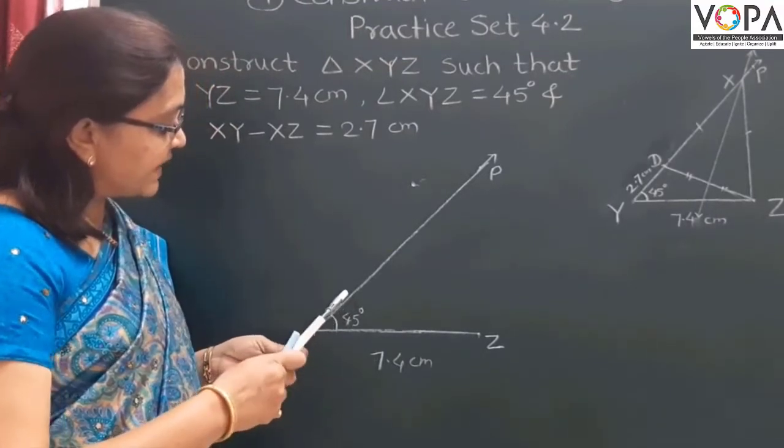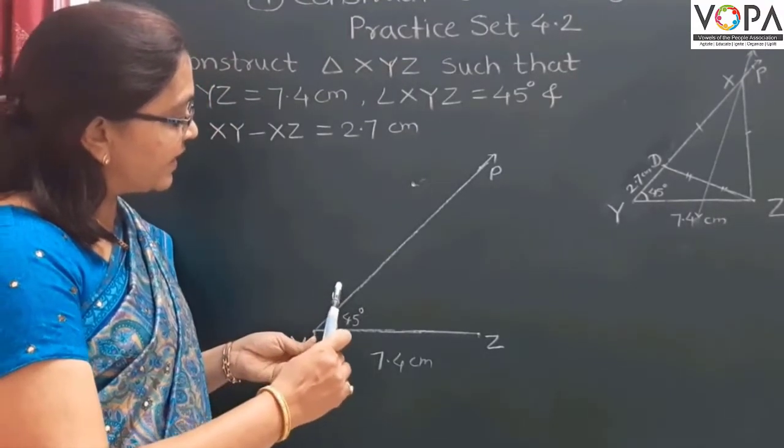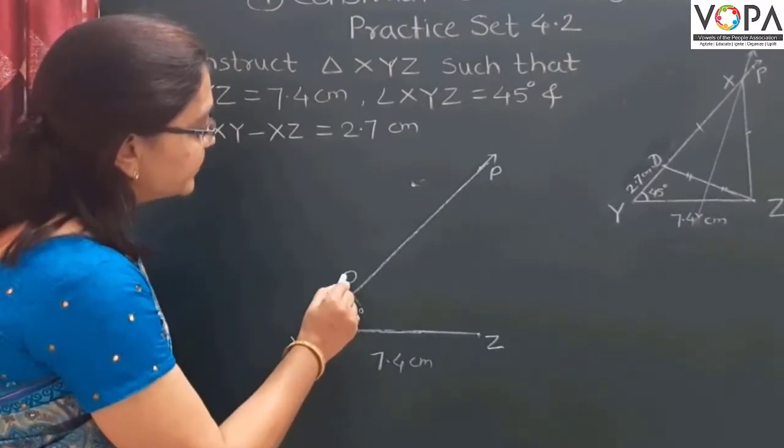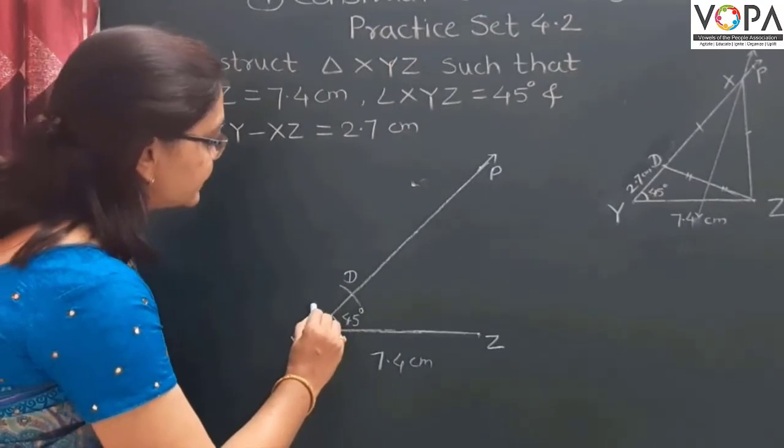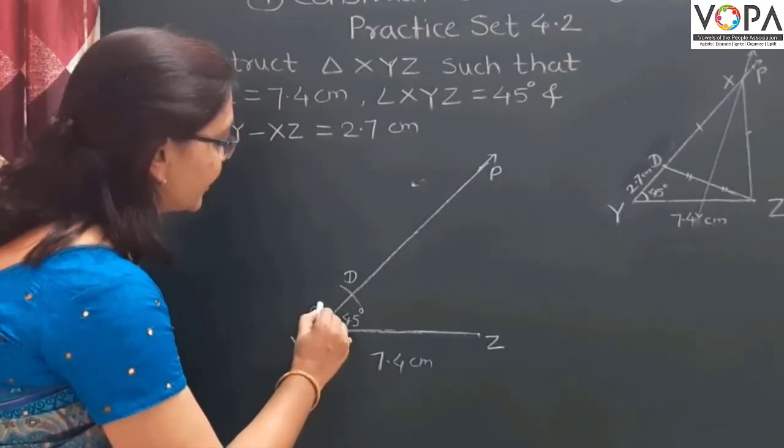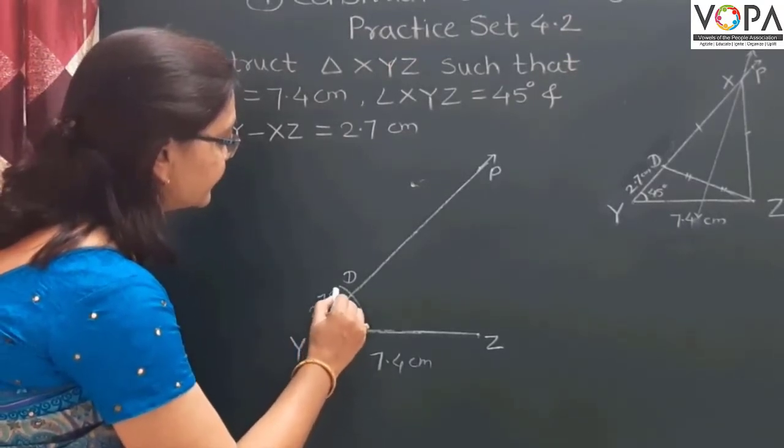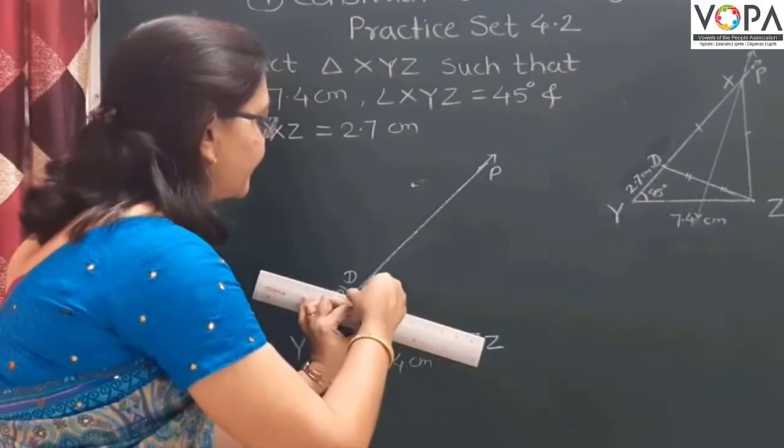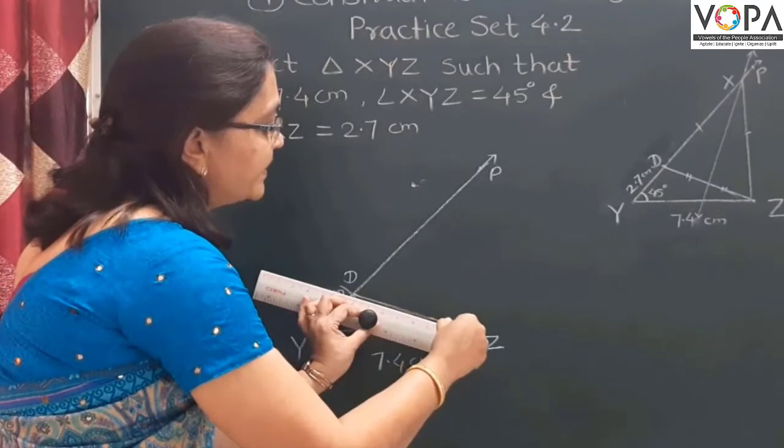Place the compass at point Y and draw an arc like this. Mark point D at distance 2.7 cm. Draw segment DZ.